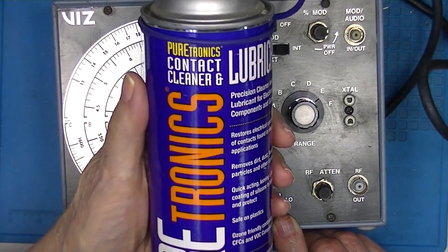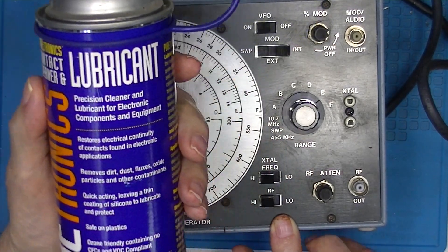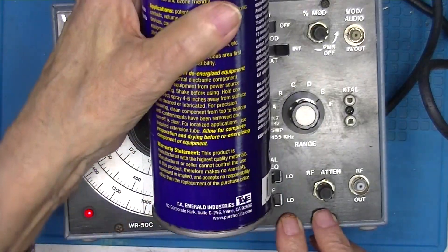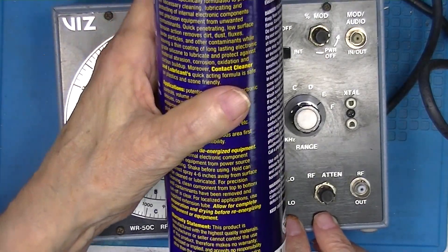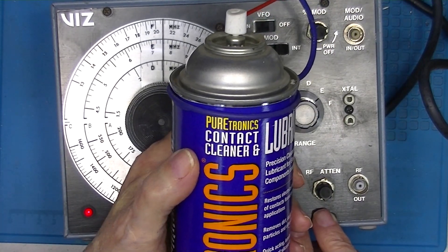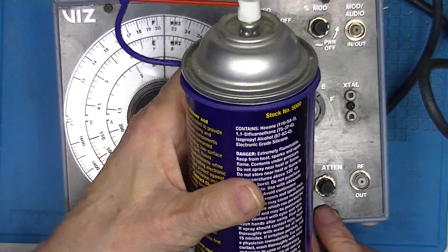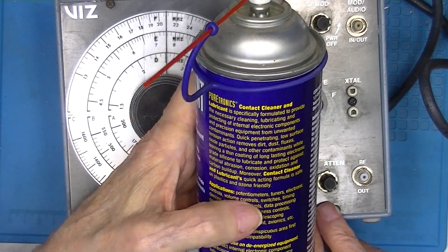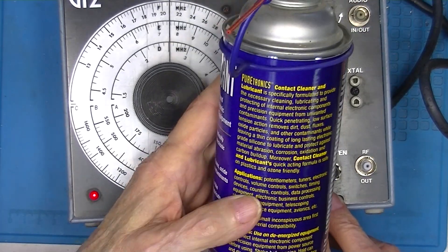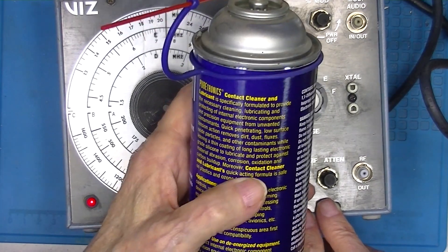The contact cleaner I used, and I don't know if it's truly suitable for potentiometers, but it works, was made by TA Emerald under the brand name of Puretronic Contact Cleaner. I have no idea where I purchased it. And it does say applications: potentiometers, tuners, volume controls, I assume switches. Anyway, it's a contact cleaner.